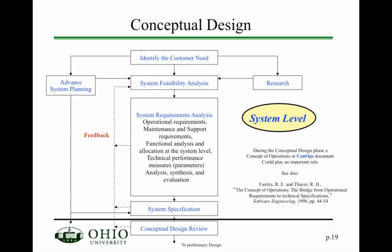After establishing all these requirements, you are essentially done with the system specifications and proceed to the conceptual design review, where you review all the requirements and basic concepts. It's important to realize that all the work done in conceptual design is at the system level. An important part of conceptual design is to write a CONOPS document — a concept of operations document — which, while not required, is often done for many projects.